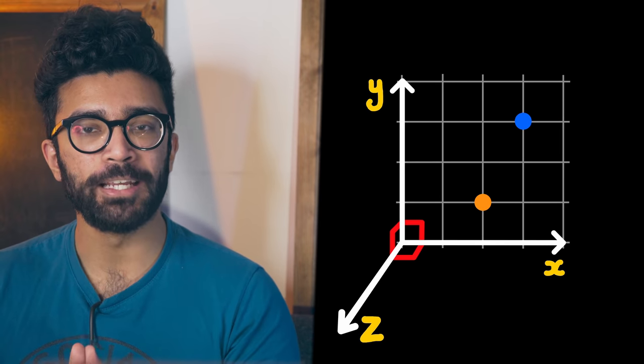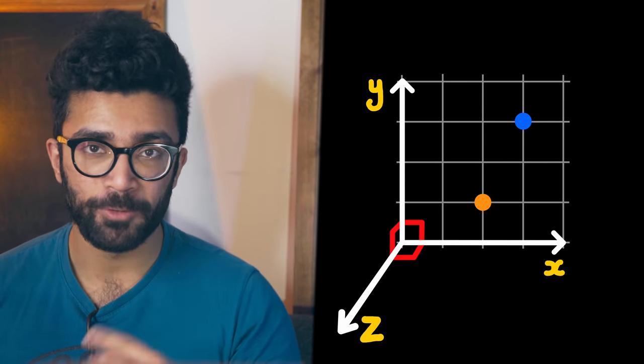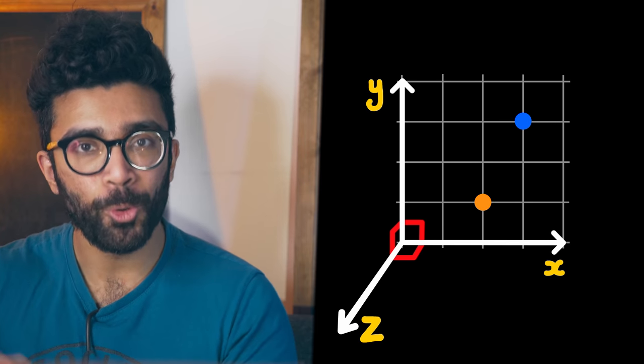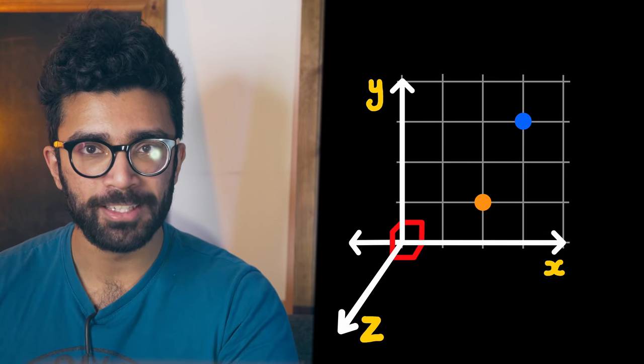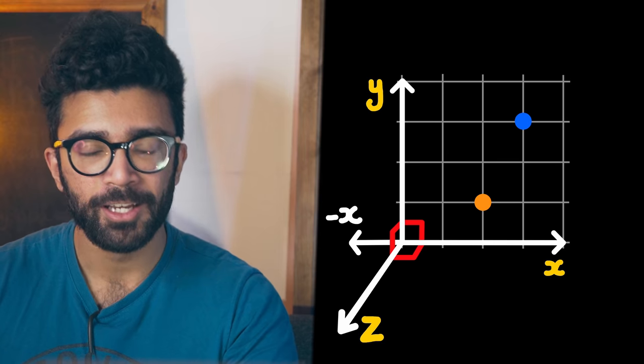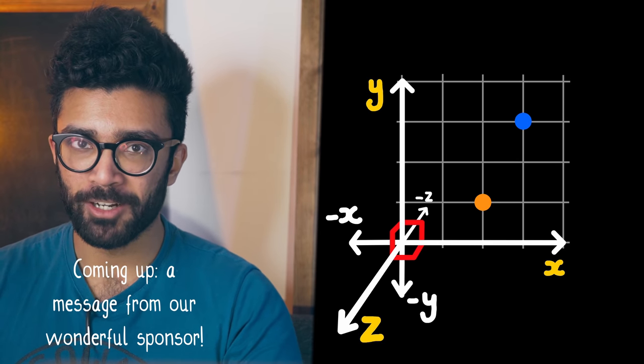Try it yourself. See if you can find a way to have a fourth direction, so that all the directions that we've defined are at 90 degrees to all the other directions. And remember, of course, this direction is just negative X, and we also have negative Y and negative Z, so they're already covered. They don't count.